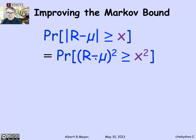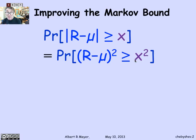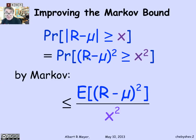What's nice about this is that (r minus mu) squared is a nonnegative random variable to which Markov's theorem applies — the square of a real number is always nonnegative. So let's apply Markov's theorem to this new random variable, (r minus mu) squared. Markov's bound tells us that the probability that the squared variable is as big as x squared is simply the expectation of that squared variable divided by x squared. This is just applying Markov's bound to the variable (r minus mu) squared.